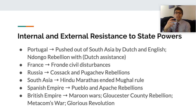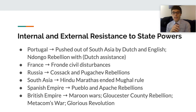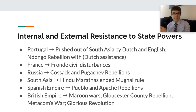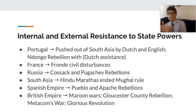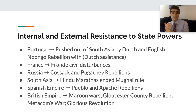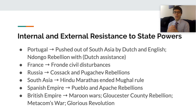Metacom's War was the final major attempt of indigenous peoples to drive the British out of New England. It spread throughout New England and was a conflict between Native Americans and settlers, resulting in the destruction of 12 towns. Some Native American groups, such as the Mohegan and the Pequot, sided with the English because they had been promised land. The war ended with the subjugation of the Wampanoag people to the English colonists. It is sometimes referred to as King Philip's War — the derisive English name given to Metacom, the Native American chief.